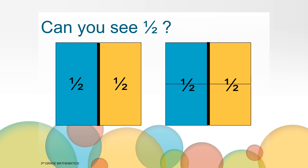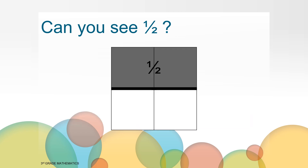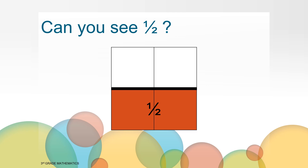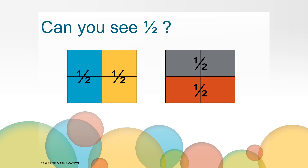Let's look at another way you might have seen one half. You may have noticed that the rectangle is also split in half going across horizontally. So one half can be the top half, or it can be the bottom half. To recap, here are some of the ways that you might have seen one half of this rectangle.